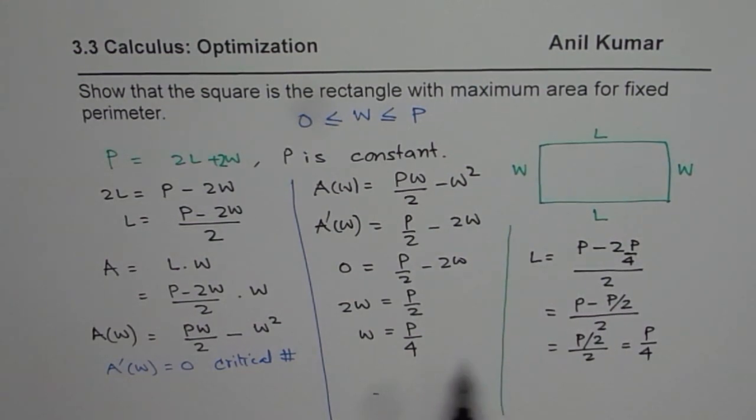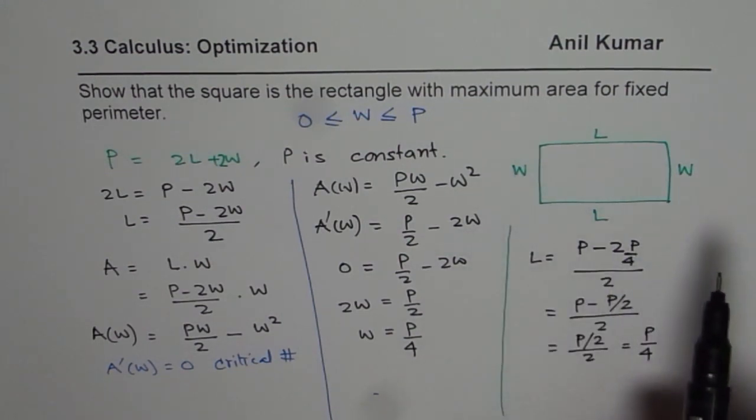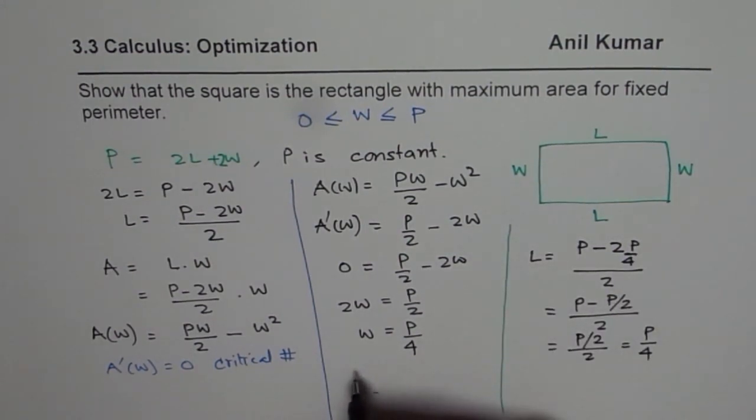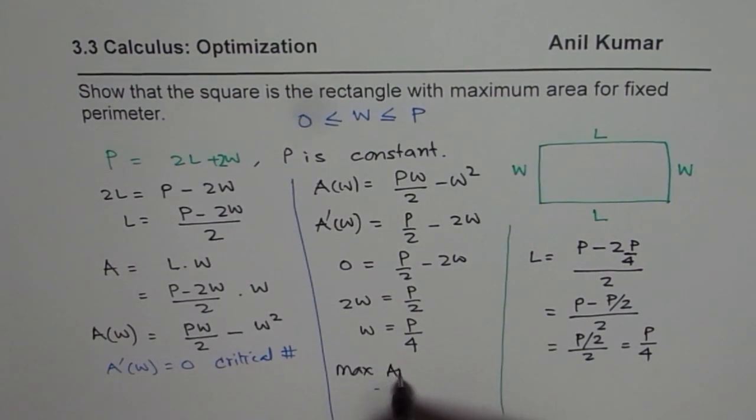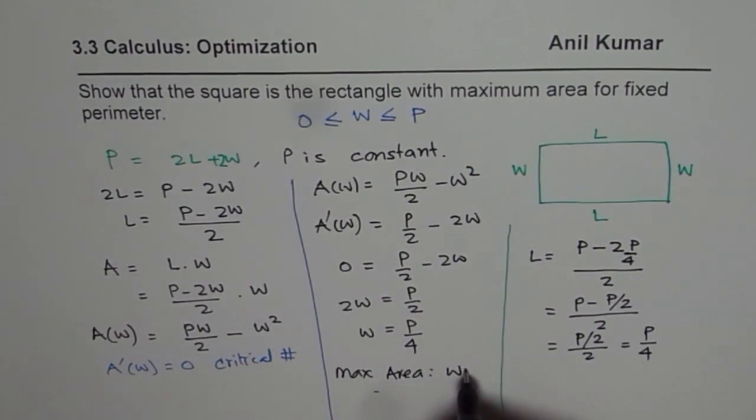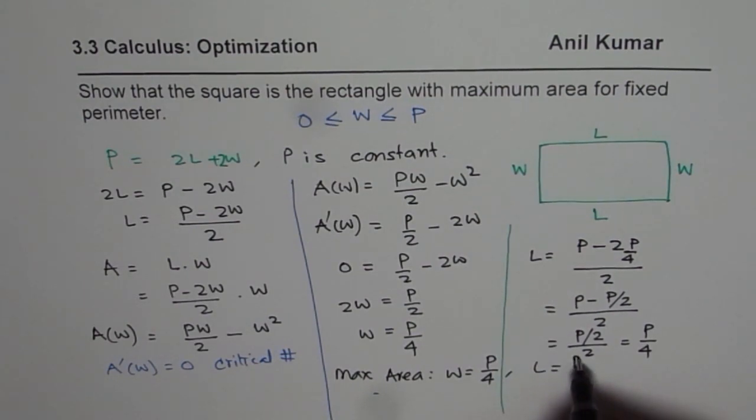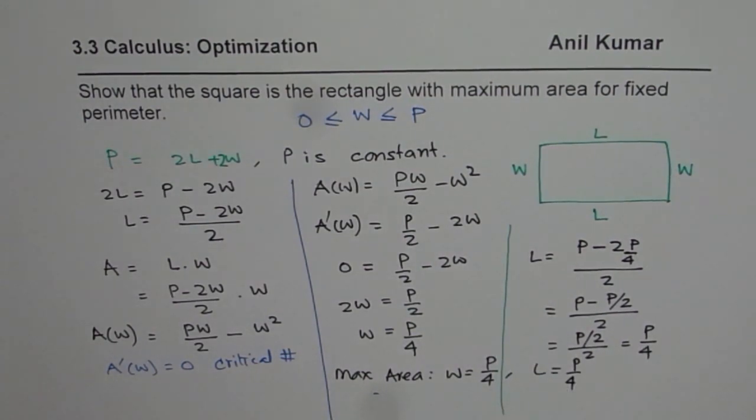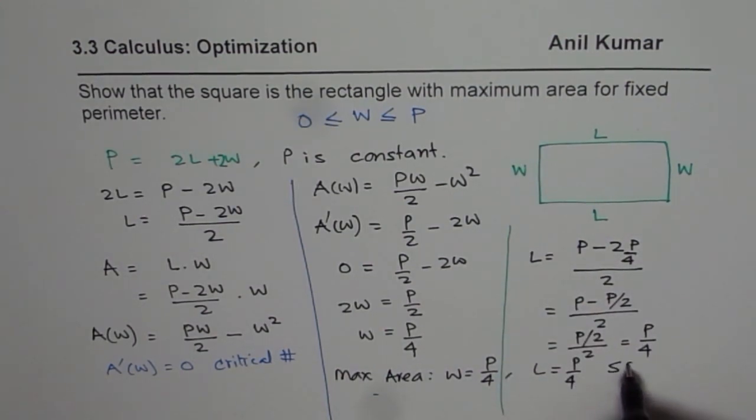So what we notice is both length and width are same. So that means the structure is a square. So what we get is for maximum area, width equals one fourth of perimeter, and length is also equals one fourth of perimeter. So since both those sides are equal, it is a square.